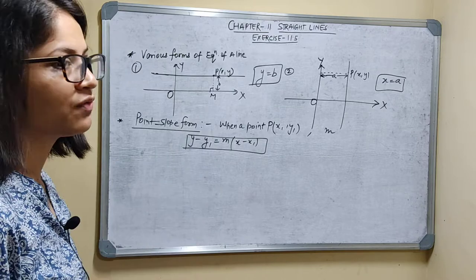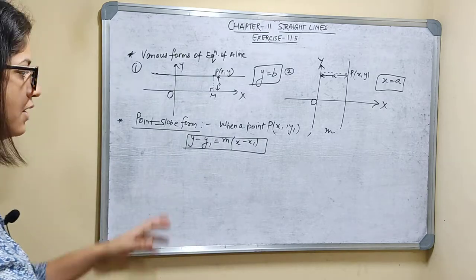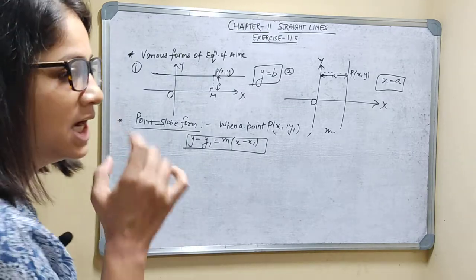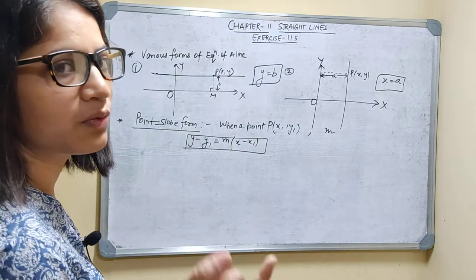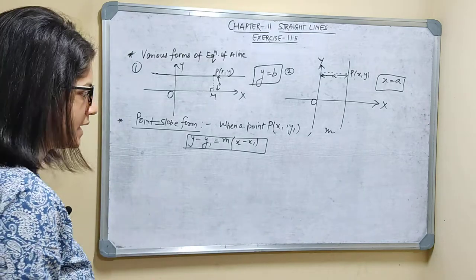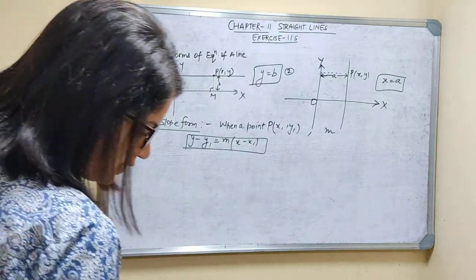So the Point Slope Form formula: when a point is given and slope is given, you have to find the equation of a straight line. The formula will be y minus y1 is equal to m times x minus x1.